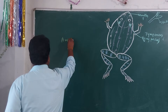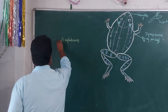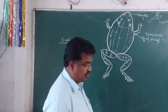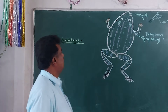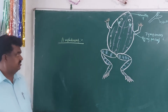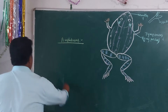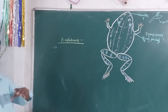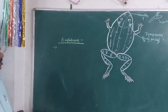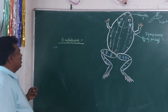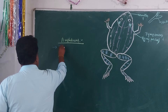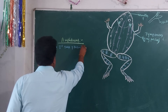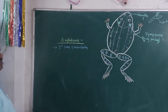Amphibians are the first group of Tetrapods, under Class Amphibia. These are the salient features of Amphibians. First character: Amphibians are the first members, or first group of Tetrapods, under Class Amphibia.